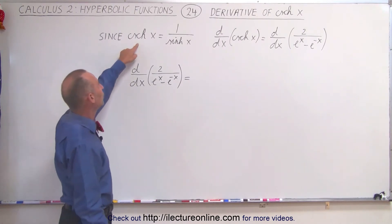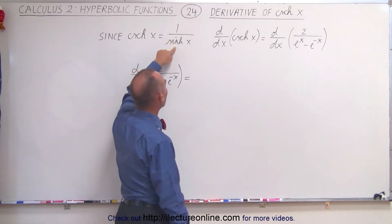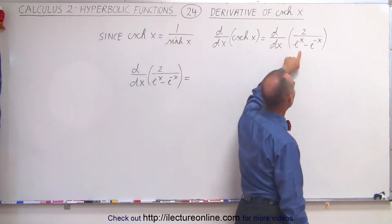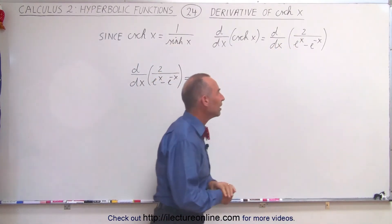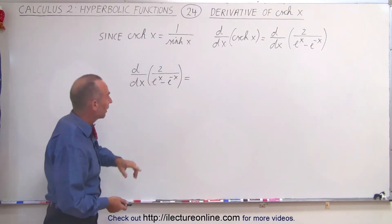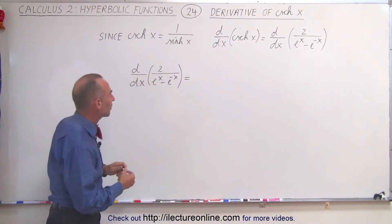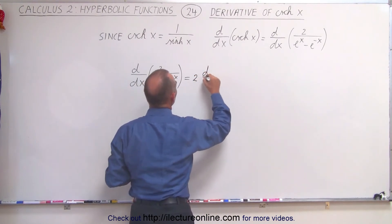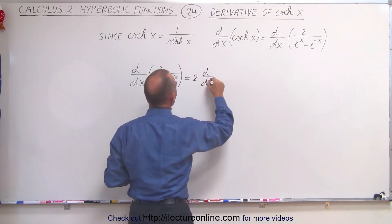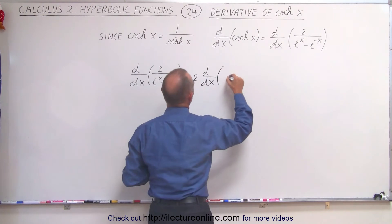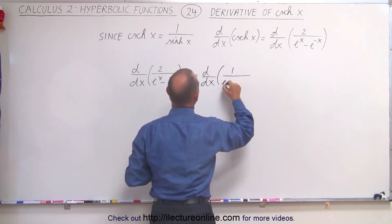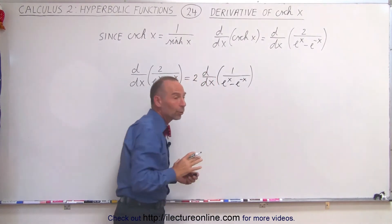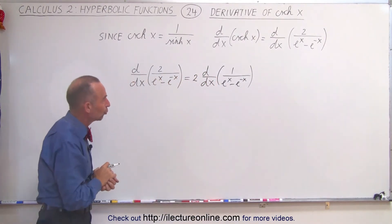Notice the hyperbolic cosecant of x is equal to the inverse of the hyperbolic sine, so it comes down to taking the derivative of 2 divided by e to the x minus e to the minus x. We're going to first factor out the 2, so this becomes 2 times the derivative of 1 over e to the x minus e to the minus x, and then we're going to use the quotient rule for that.